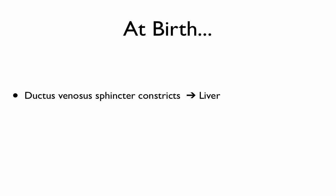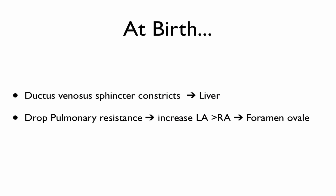When you take your first breath, the ductus venosus sphincter constricts, meaning blood is shunted to the liver for the first time. There is a massive drop in pulmonary resistance with surfactant in the lungs, and taking that first breath increases blood flow back to the left atrium. This means left atrial pressure becomes greater than right atrial pressure for the first time, causing the foramen ovale to slam shut.